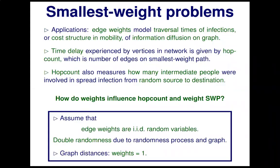That gave the very first explanation of what it means to be a complex network. We still need to think about how to model that mathematically, which we'll do later. But let's first think about information diffusion and, in particular, about smallest weight problems.